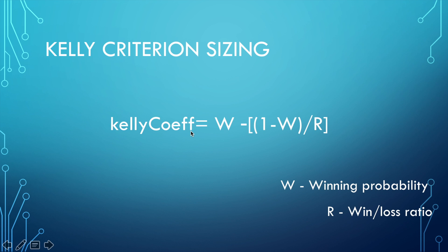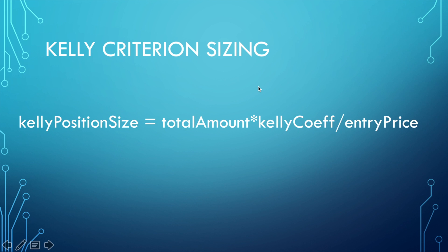Today, the Kelly Criterion is widely used in finance and investing. Here is the formula for Kelly coefficient calculation. This coefficient, like the trade risk coefficient in the previous example, is a number by which our total amount of funds has to be multiplied to get the optimal position size. The Kelly coefficient uses two variables: the first is winning probability — the ratio between winning (profitable) trades and total trades — and the win-loss ratio, calculated by dividing average profit from profitable trades by average loss from losing trades. The Kelly position size is then calculated by multiplying total funds by the Kelly coefficient and dividing by the position entry price.